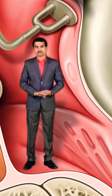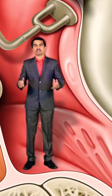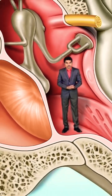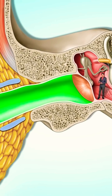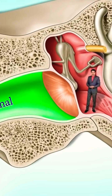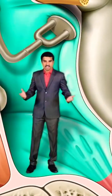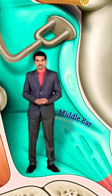Anatomy of the middle ear. The ear is structurally divided into three parts. The outer part is made up of the pinna as well as the external auditory canal. The next one is the middle ear. The place where I am standing is called the middle ear or the tympanic cavity.